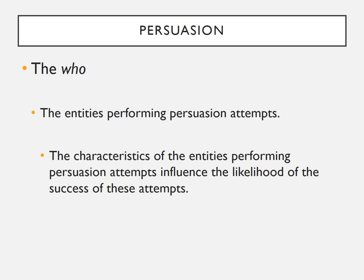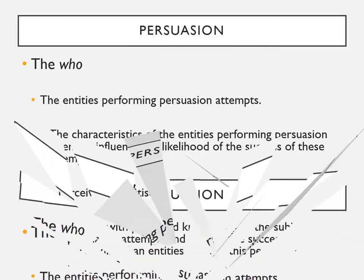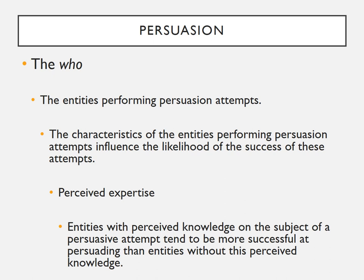Let's begin with the 'who,' or the source of the persuasion attempt. The characteristics of entities performing persuasion attempts definitely influence their likelihood of success. One key characteristic is perceived credibility. In general, entities who are perceived as knowledgeable on the subject of a persuasive attempt tend to be more successful at persuading than entities without that perceived knowledge. For example, a physician trying to convince someone to use a particular headache medicine is a much more credible source than a person without a medical degree, and is therefore more likely to succeed at persuasion.